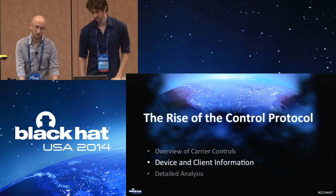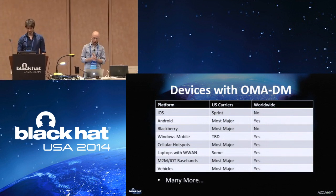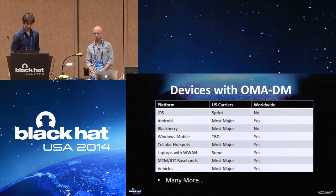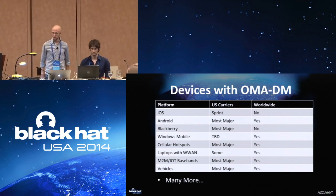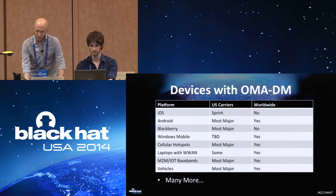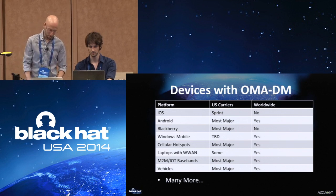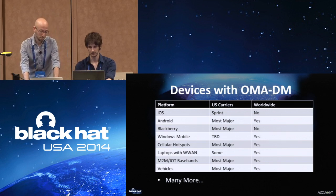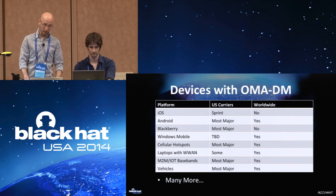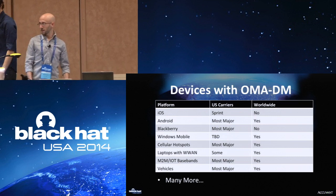Current devices with OMA DM that we have found: iOS has it on Sprint only. Android — in the US, most major carriers; we can guarantee three out of four usually have it. Please make sure it is turned off if you have a major carrier device — we are running live base stations. Also Blackberry and Windows Mobile. It's also in hotspots, laptops, M2M, and IoT basebands. They are now trying to standardize on OMA DM as the new device management standard for IoT and M2M devices, which includes cars.